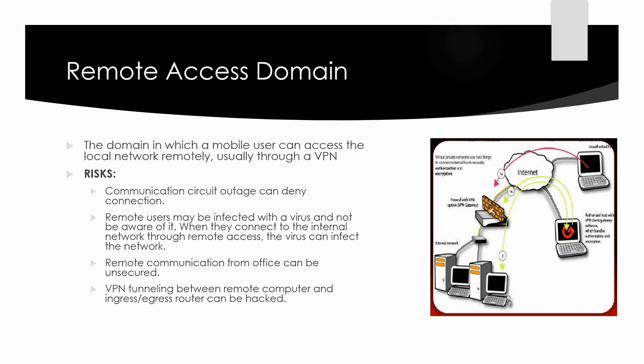The risks in this domain are: a communication circuit outage can deny connection. Remote users may be infected with a virus and not be aware of it, so when they try to connect to the internal network through remote access, the virus can infect the entire network. Remote communication from the office can be unsecured. And VPN tunneling between the remote computer and the ingress and egress router can be hacked.